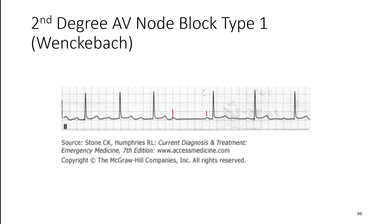In Type 1 or Wenckebach, we see a progressive increase in the PR interval. It already starts a little elongated — probably 0.24 — but then it gets a little bit longer, a little bit longer, and eventually it's so delayed it never even gets through, and we lose a QRS complex. There's some blockage at the AV node such that the action potential created in the SA node, though we still have a normal P wave, just doesn't get through to the ventricles, so we end up losing a QRS complex, and then things restart.